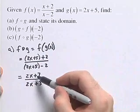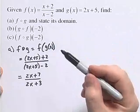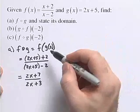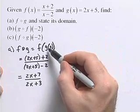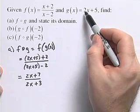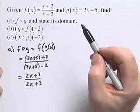Our composition f of g is equal to 2x plus 7 divided by 2x plus 3. We need to state the domain of this function. To find the domain of a composition, we first look at our inside function, which in this case is g of x. g of x is a linear function defined for all real numbers, so we have no restricted values so far.